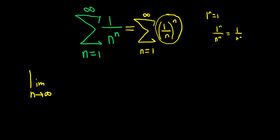Now, this is already positive, so we don't need the absolute value. So I'll just write the nth root of 1 over n to the n.